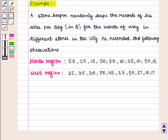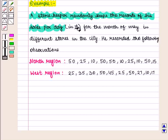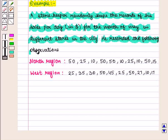Let us consider the following example. A storekeeper randomly keeps the records of his sales per day in dollars for the month of May in different stores in the city. He recorded the following observations.